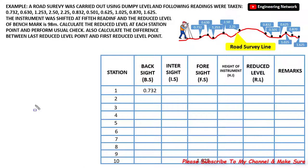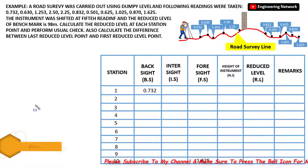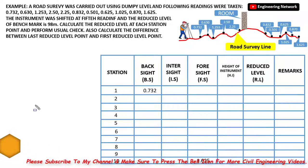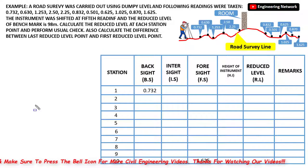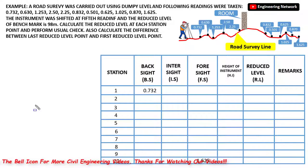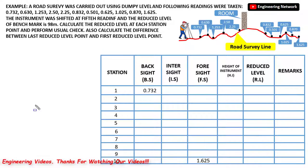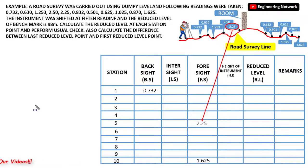In the statement of this problem, it is given that the instrument is shifted at the fifth reading, which means there is some kind of obstruction in the road survey line. Let's assume it is a room right here, and due to this obstruction I am not able to see anything beyond it. So I have to shift the instrument, and before shifting I will take a last reading.